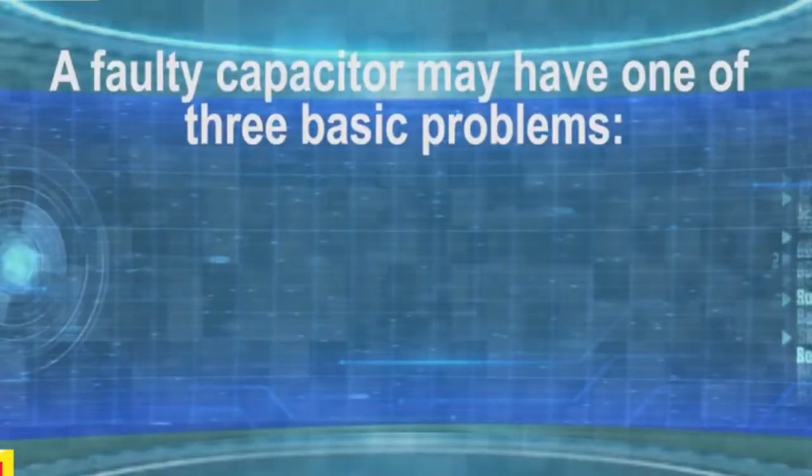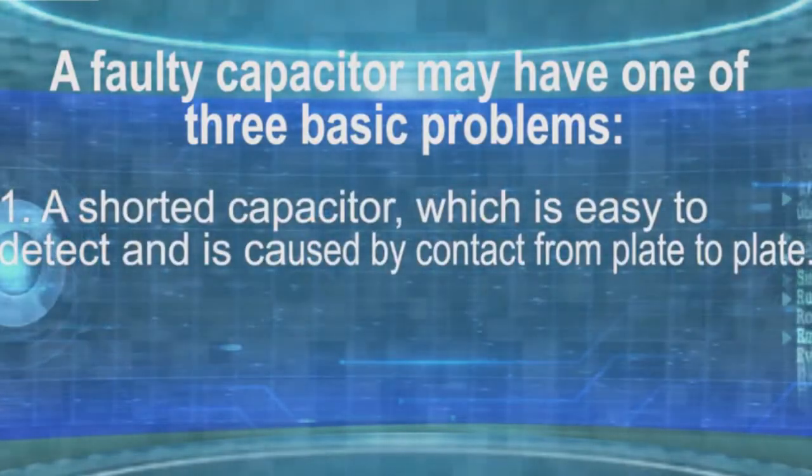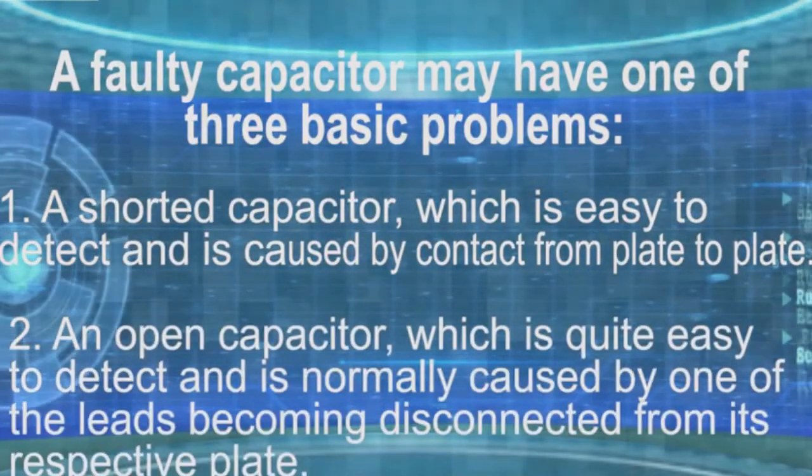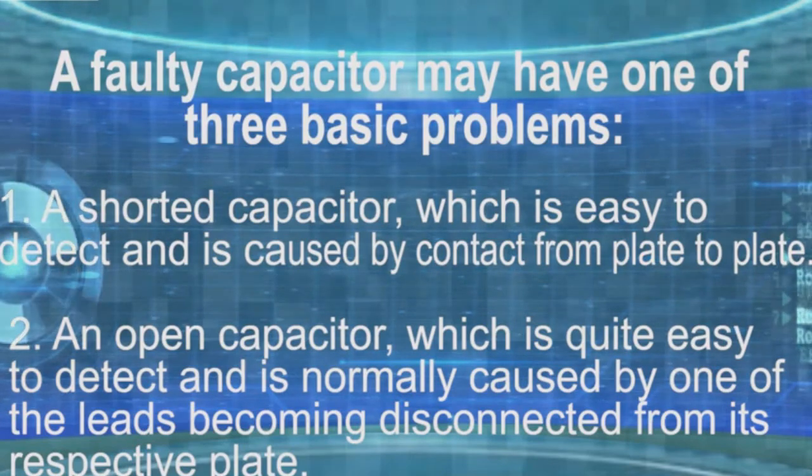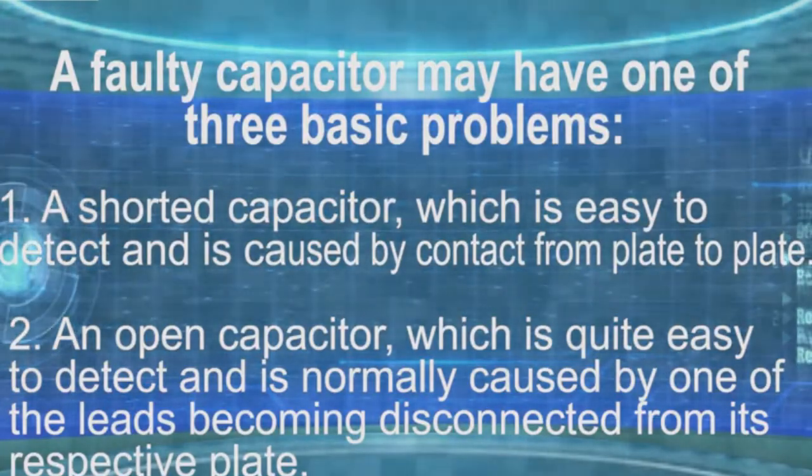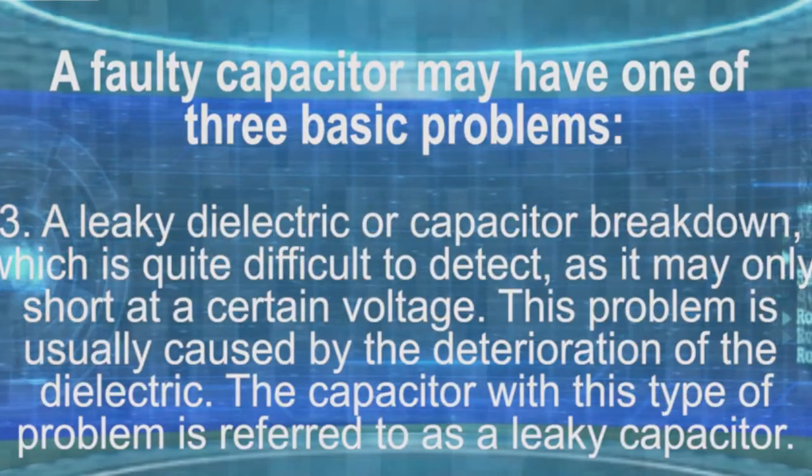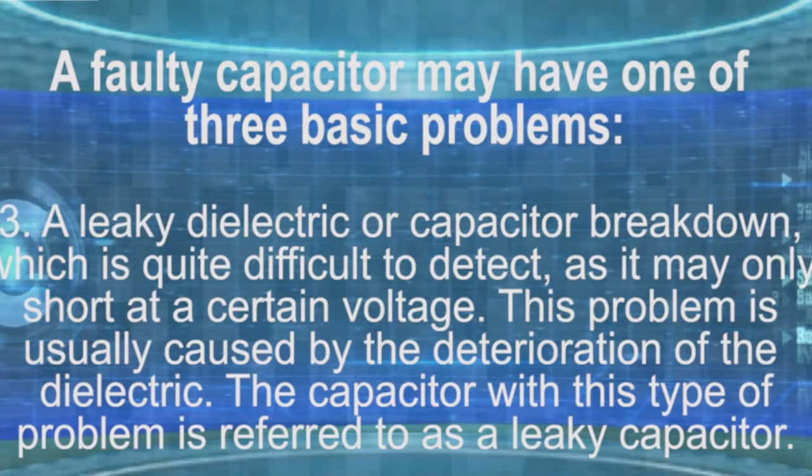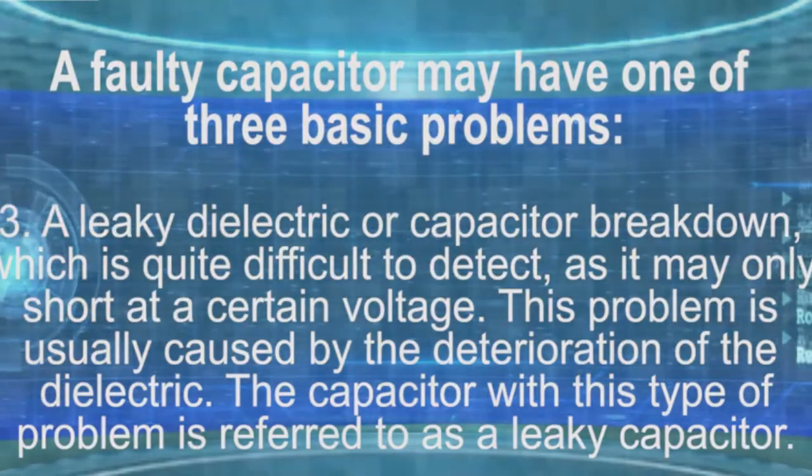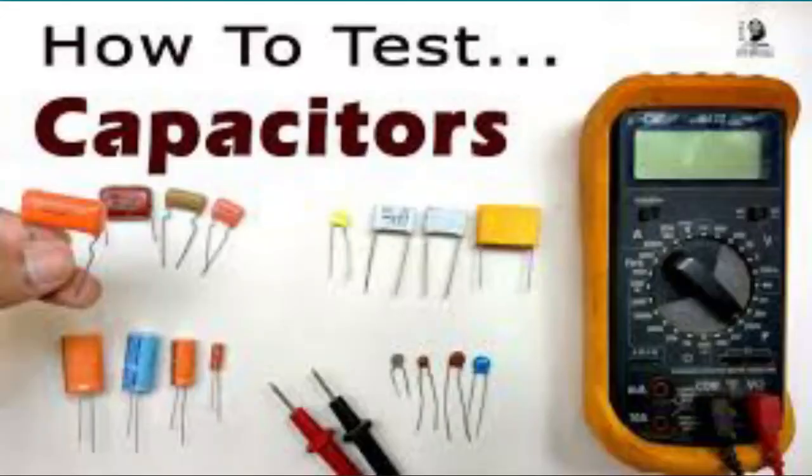A faulty capacitor may have one of the three basic problems. A shorted capacitor, which is easy to detect and is caused by contact from plate to plate. An open capacitor, which is again quite easy to detect and is normally caused by one of the leads becoming disconnected from its respective plate. A leaky dielectric or capacitor breakdown, which is quite difficult to detect as it may only short at a certain voltage. This problem is usually caused by deterioration of the dielectric. The capacitor with this type of problem is referred to as a leaky capacitor.